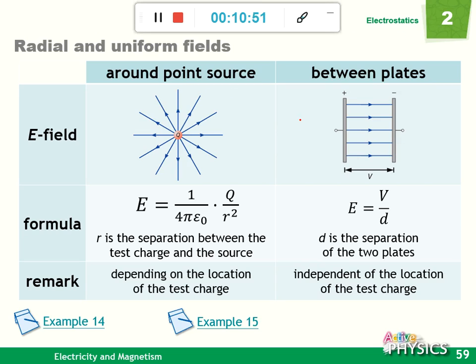In this table, you can see the difference between point source and parallel plates. For a point source, the E field is a radial field. The longer the distance, the smaller the E field. But for parallel plates, at any position they have the same electric field strength E. The formulas are different. This one depends on the distance, this one does not. We note that one depends on the location of the test charge, and the other is independent of it.